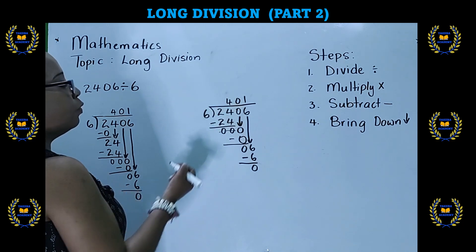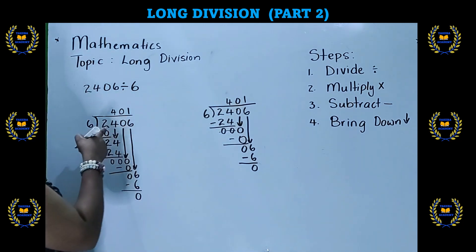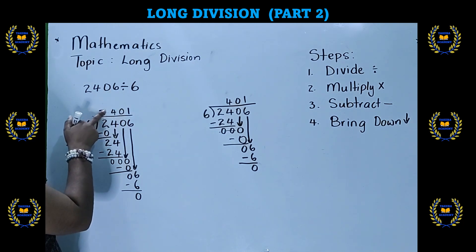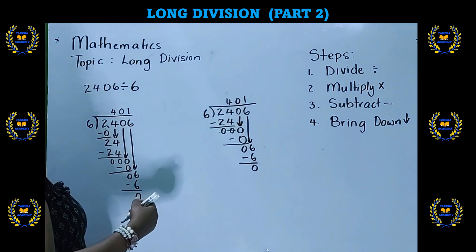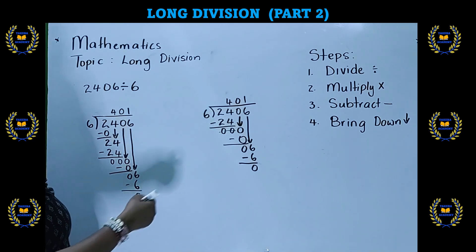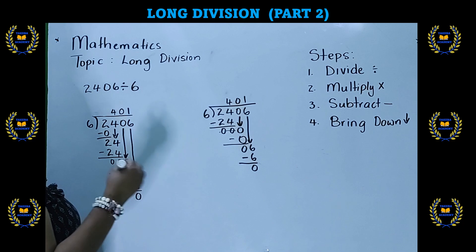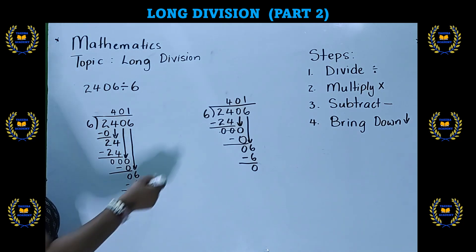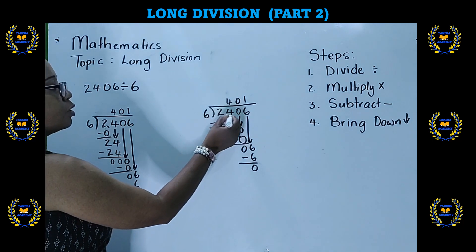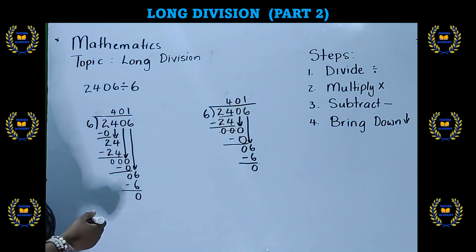So our answer is 401. If you notice, it's the same answer as this one. We had a 0 here, but the 0 didn't have any value, so I erased it. So if you were not sure, when you saw the first number and you were not able to divide the first number by our divisor, then you used the first two numbers. And that's it for part two.